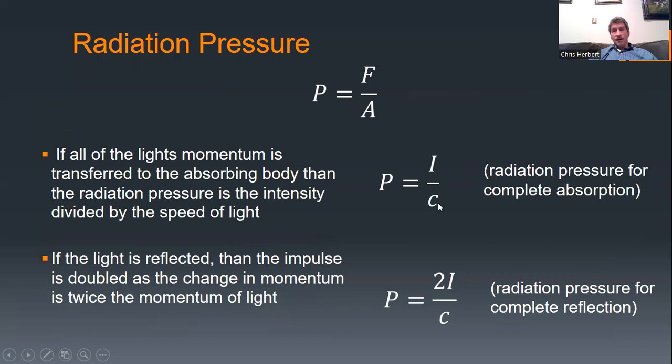is I divided by C. It is the energy density of the wave. If it reflects, then we get twice as much momentum. The momentum that is contained in the light, and then it reverses direction, so that takes an additional impulse. So radiation pressure from a reflective body is actually equal to twice the intensity divided by C.